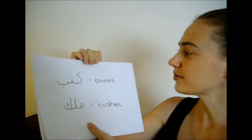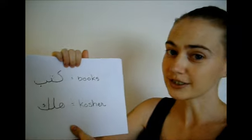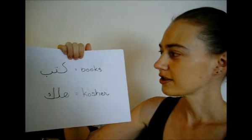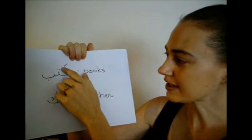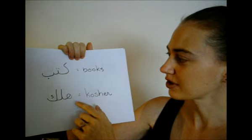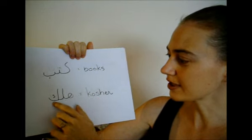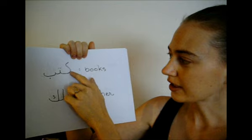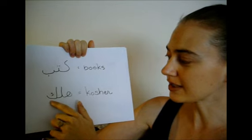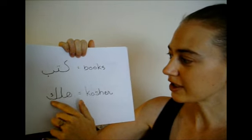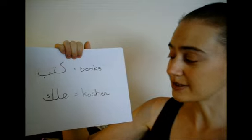And here's an example of how drastically letters can change in Arabic. This is K, Qutub, for books. This is Halak, which means kosher. And K, this is K. You can see how different they are from the beginning to the end of a letter.